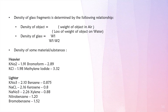With this formula, the density of glass fragments is determined: density of object equals weight of object in air divided by the loss of weight of object in water. That is, density of glass = W1 / (W1 − W2).